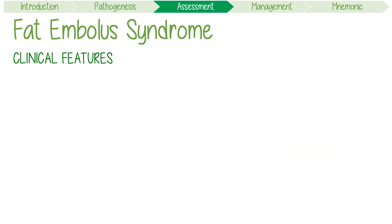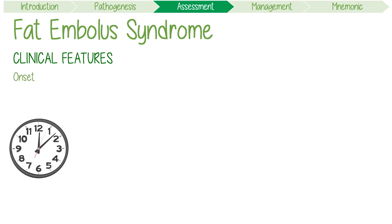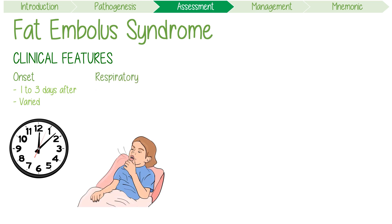Let's move on to the details of these clinical features. The onset of fat embolism syndrome typically occurs 1-3 days after the initial fracture, although this obviously varies. Respiratory abnormalities are the most common presenting features, occurring in up to 97% of cases. These might include hypoxemia, dyspnea, and tachypnea.